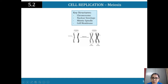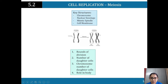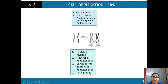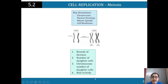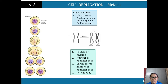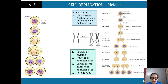We need to know the rounds of division in meiosis — that's two. The number of daughter cells you get is four, so you end up with four daughter cells in meiosis, but in mitosis you end up with two. The chromosome number of daughter cells is the haploid number — 23. The role in the body is what we're going to go through now.